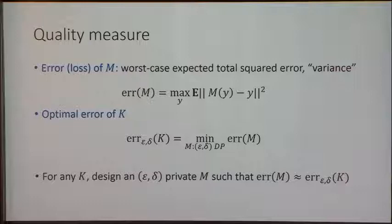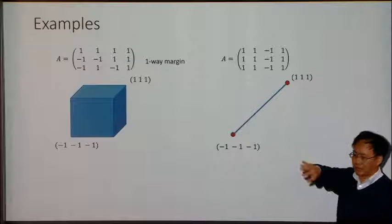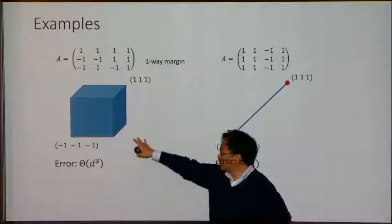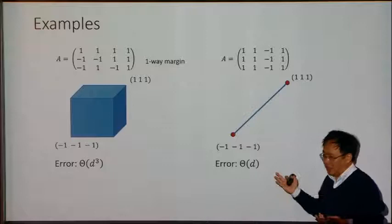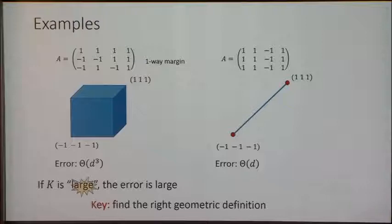Returning to the two query examples: although individual queries look similar across both query sets, their sensitivity polytopes are very different. For the first case (pure privacy in d-dimensional space), you have a d-cube and the total error needed is d^d. For the second case with identical queries, you only need d error. The intuition is that when the body is large, the error is large — so we need the right geometric definition of 'large.'